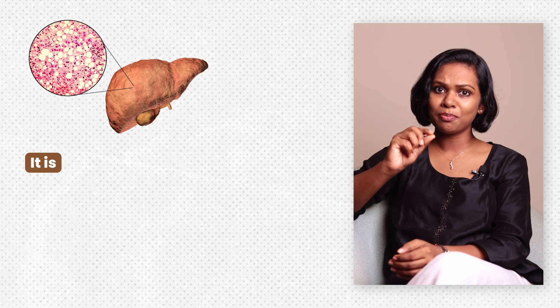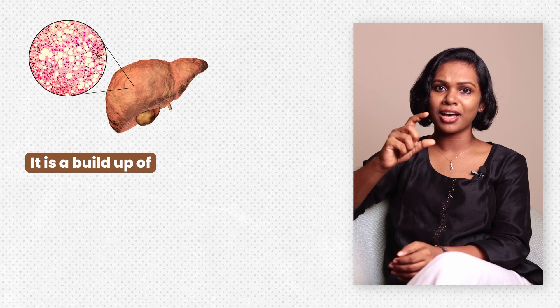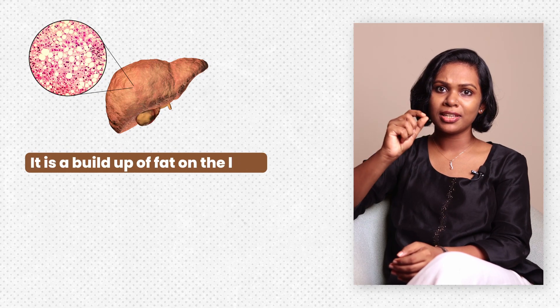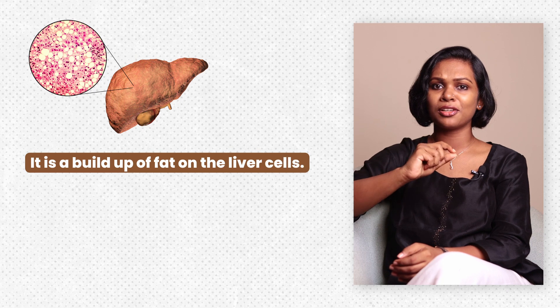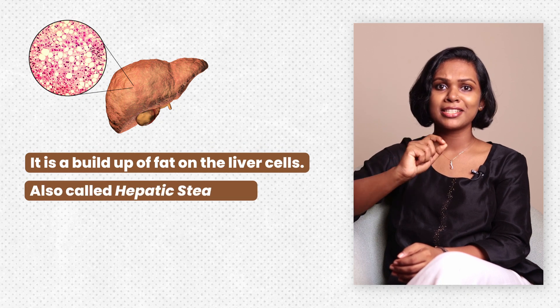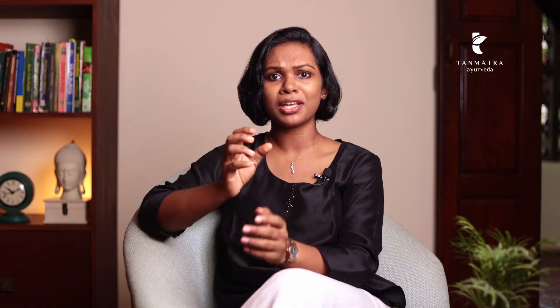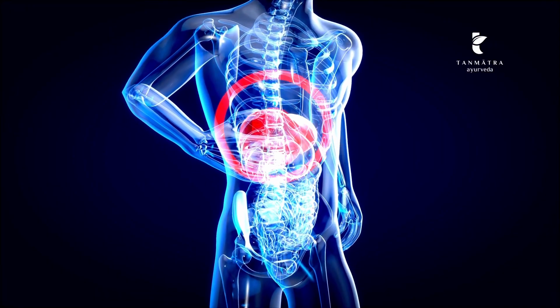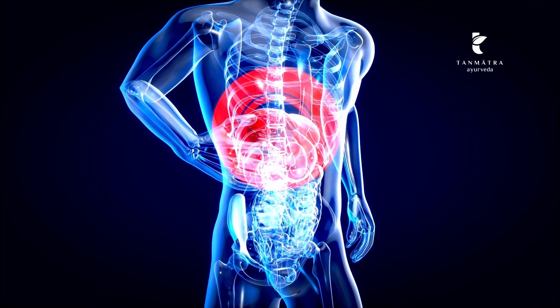Fatty liver, as the name suggests, is a build-up of fat on the liver cells, also called hepatic steatosis. It mainly happens because of the impaired functioning of the liver. Ayurvedically understood, it is basically the metabolism — or agni — that is getting hampered.